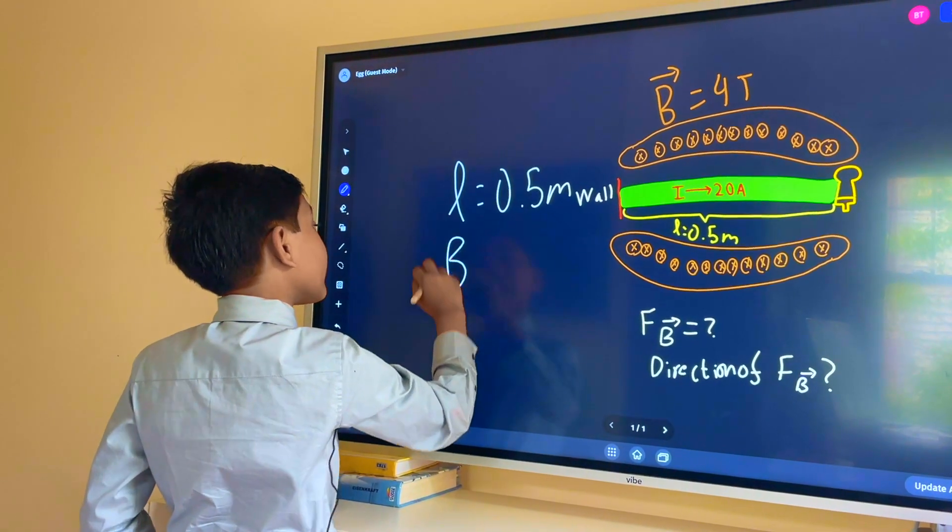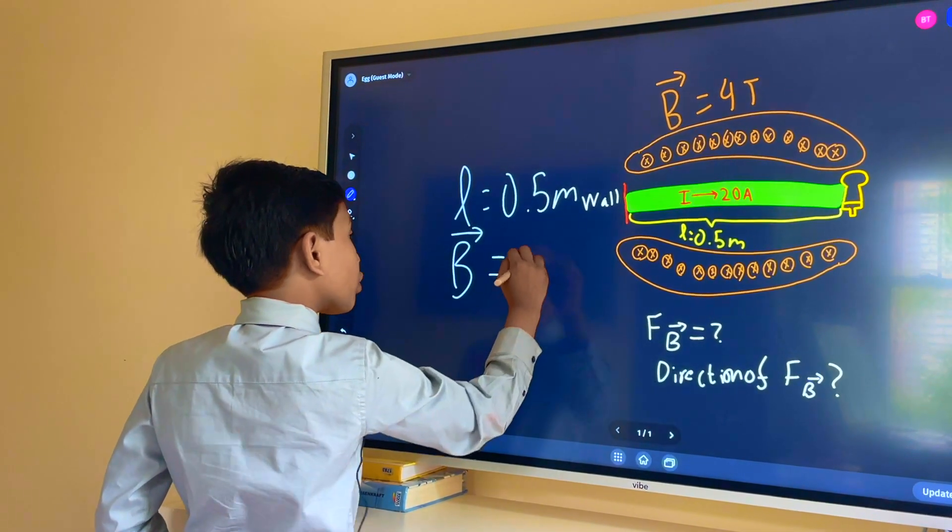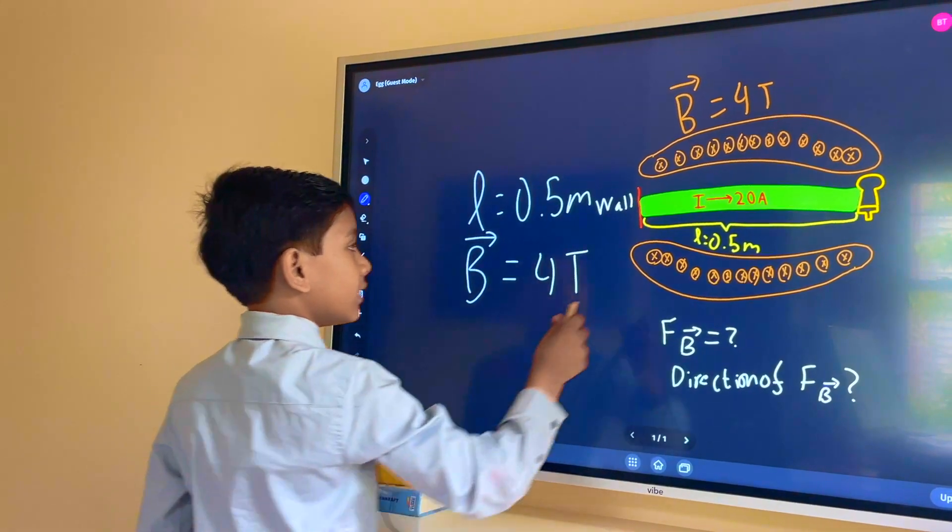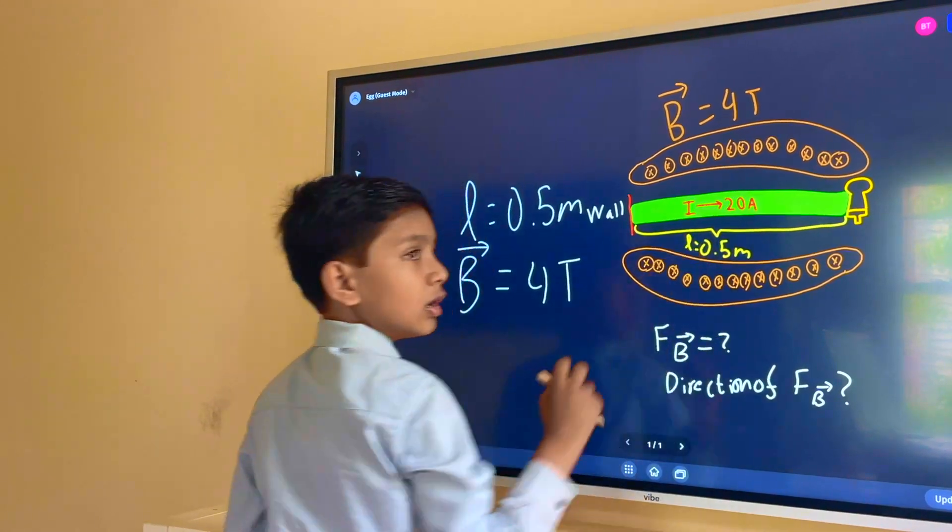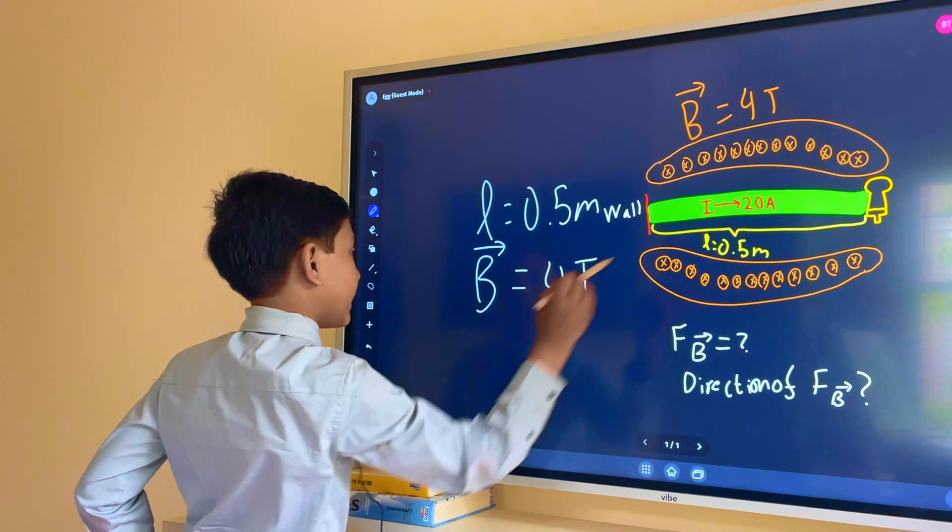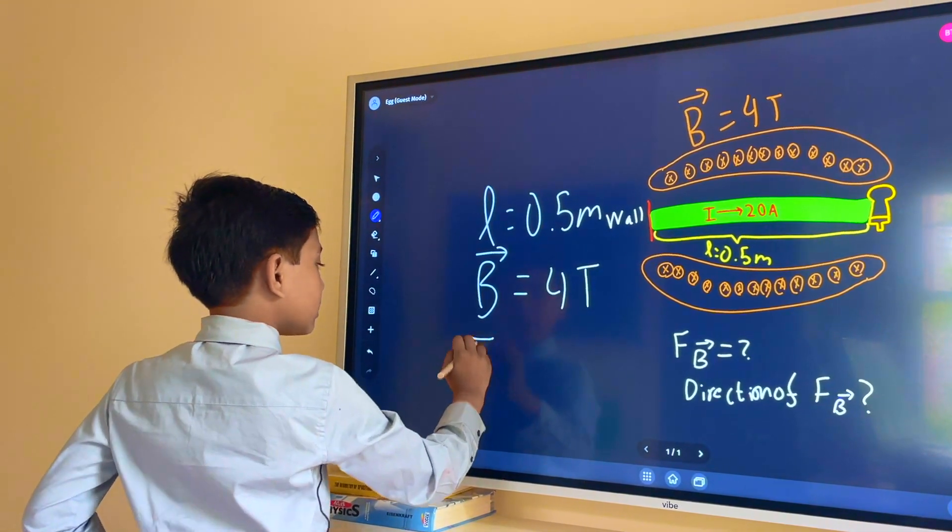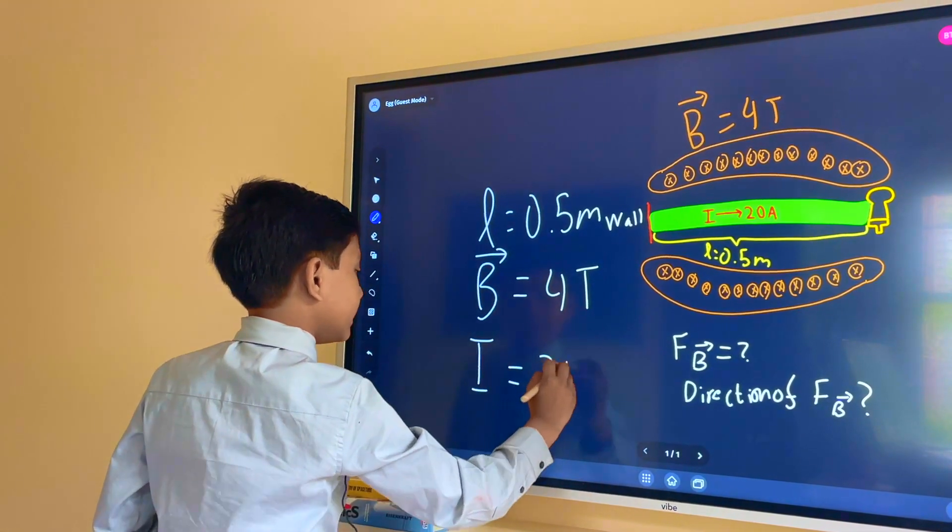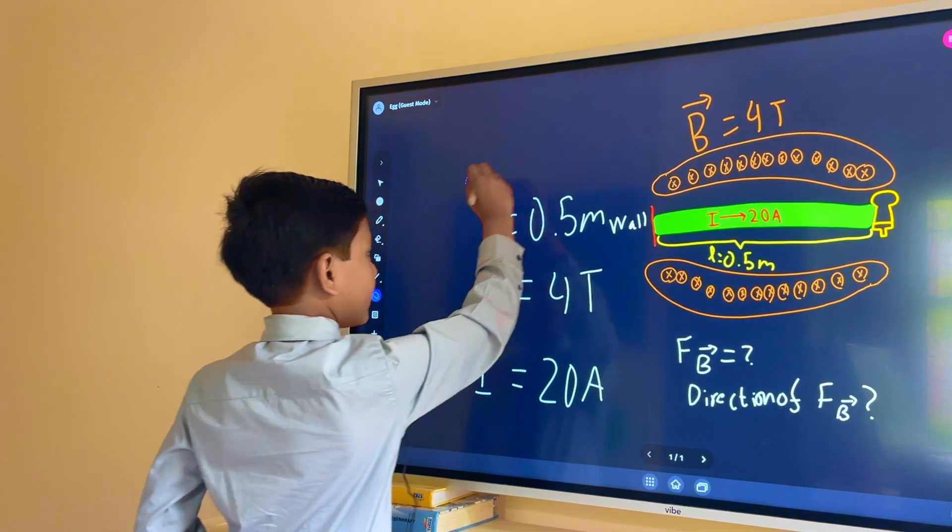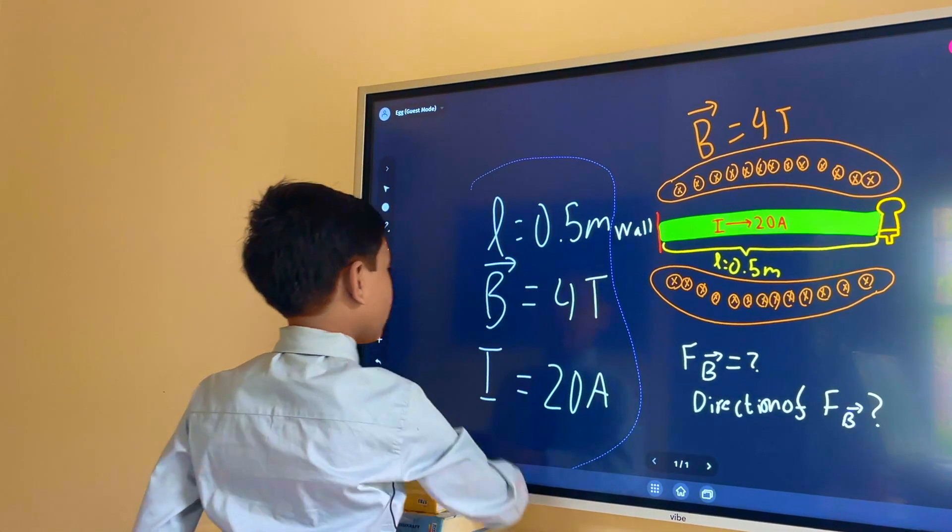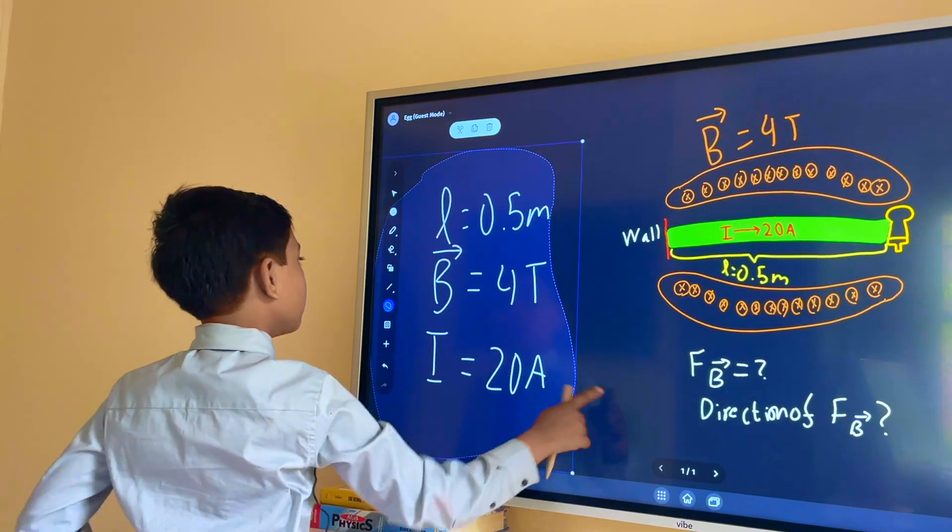So let's just write that down. Four teslas. And finally it's shown that I where the current is 20 amps. So the current is 20 amps. So this right over here is all we know so far.